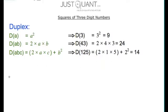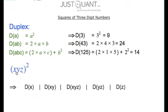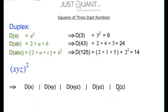Now with this knowledge of duplexes, we will see how we can square three-digit numbers easily. Consider a general three-digit number, say X, Y, Z. The square of X, Y, Z will have five parts. During calculations, we shall pass from the rightmost duplex to the leftmost duplex. The rightmost part will be duplex of Z, the next part will be duplex of Y, Z, the middle part will be duplex of X, Y, Z, the one after that will be duplex of X, Y, and finally the leftmost part will be duplex of X.